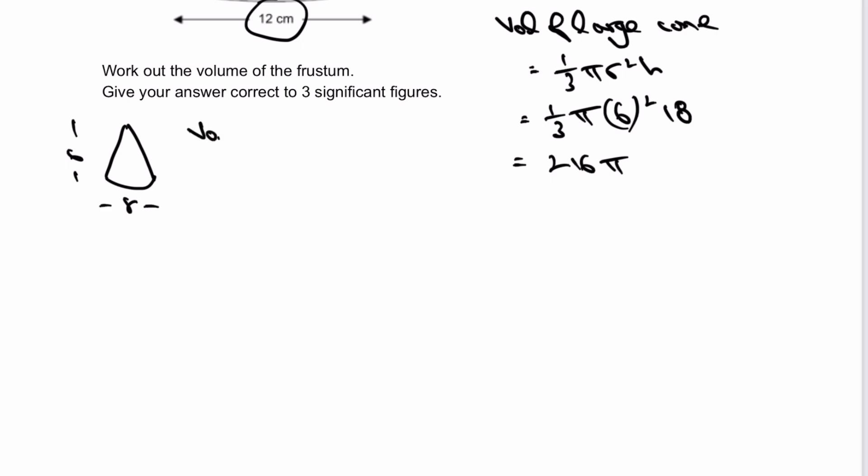The volume of the small cone is equal to one-third π r² h. I always encourage you to write out the formula each time if you can. It's good for remembering these formulas. That gives us 32π.